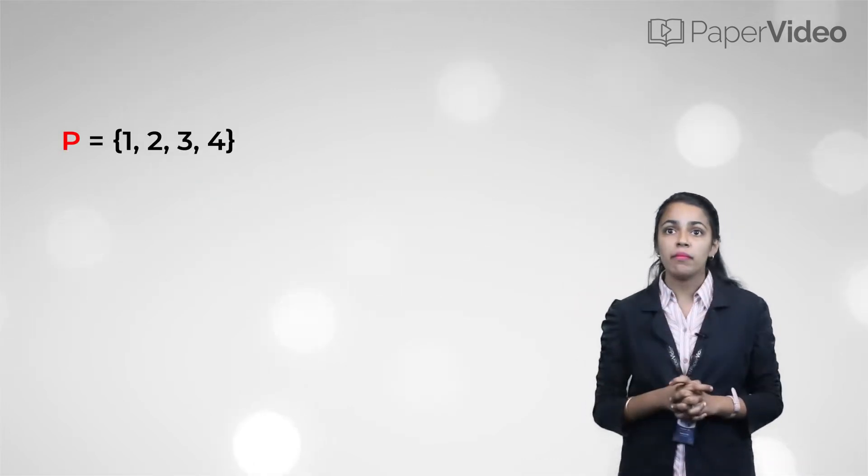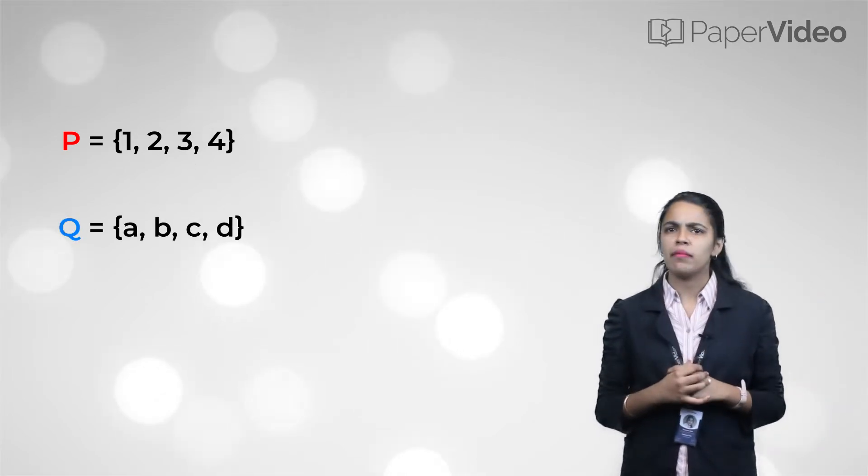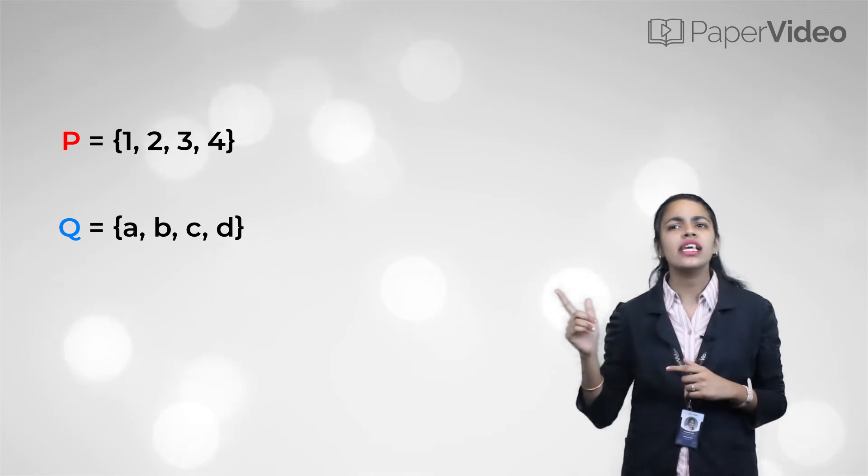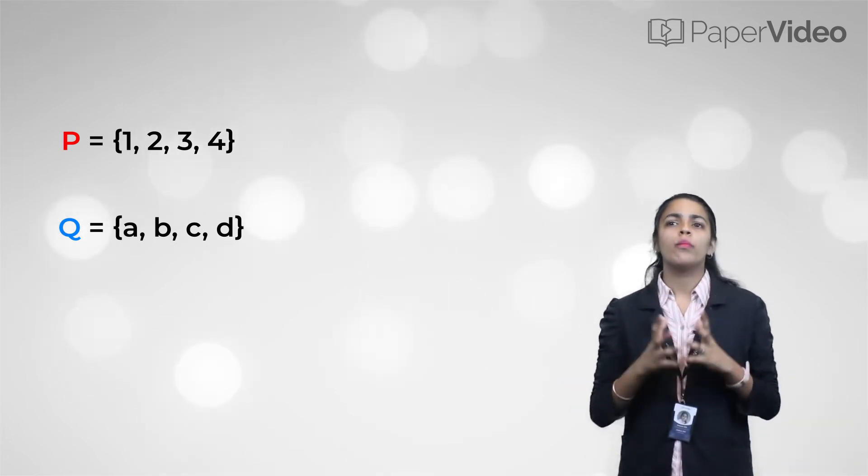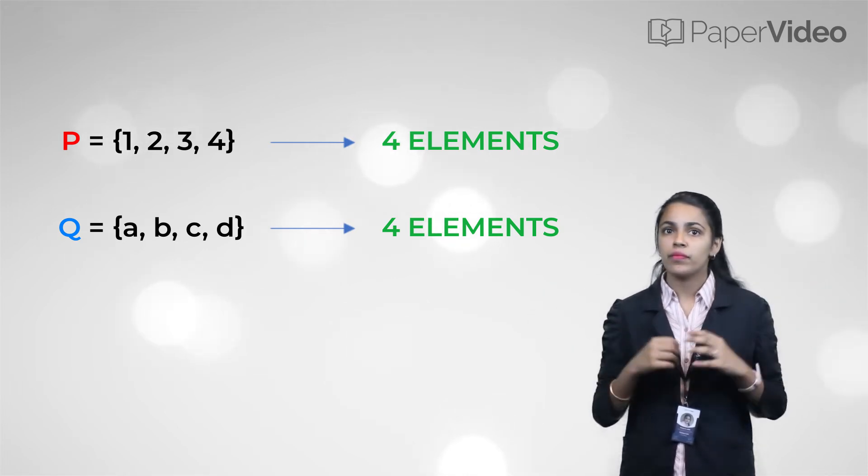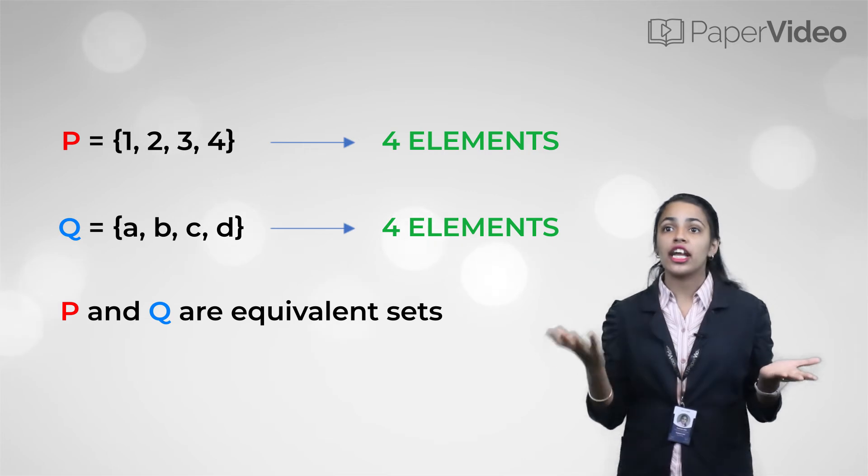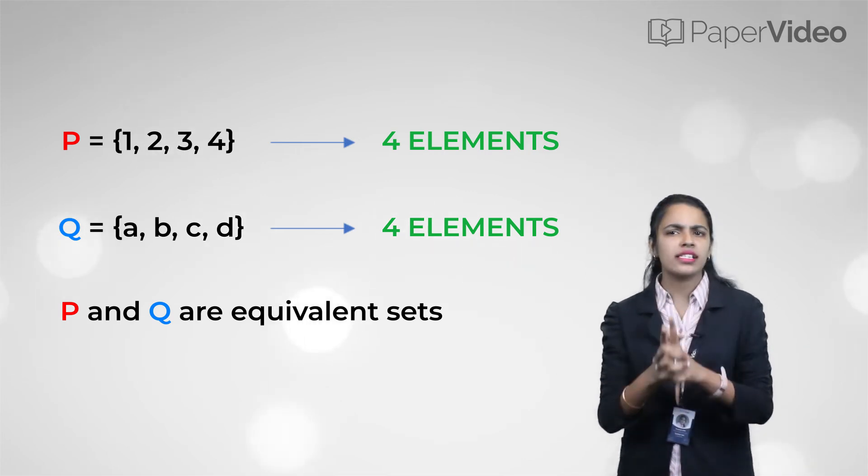For example, set P has elements 1, 2, 3 and 4. Set Q has elements a, b, c and d. Then both sets P and Q have 4 elements in each. Therefore, we can say that set P and set Q are equivalent sets.